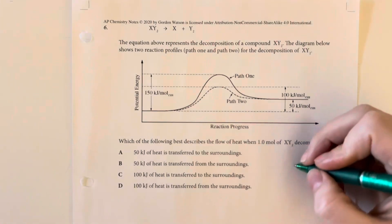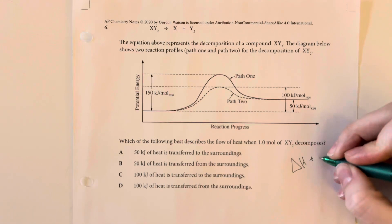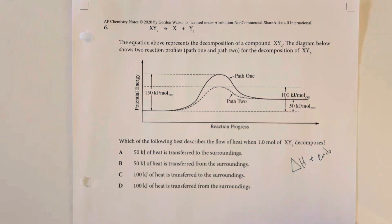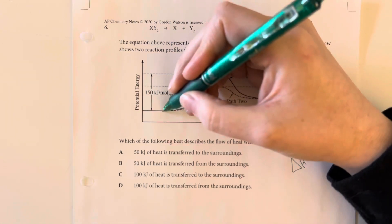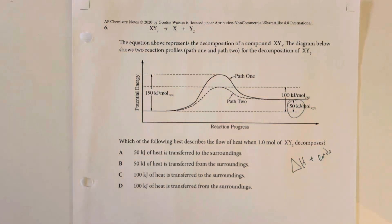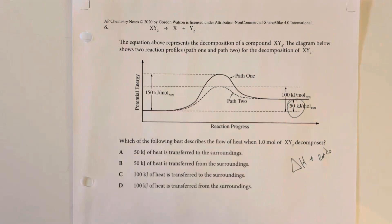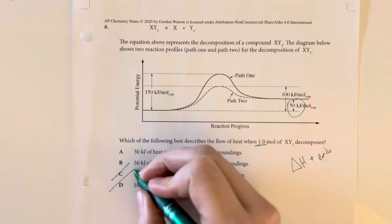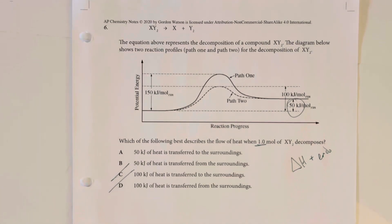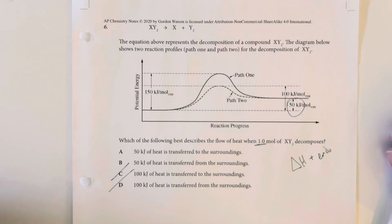We have a delta H that is positive, meaning this is endothermic — we take in energy from the surrounding area. We are measuring from the final state and the initial state, and the 50 kilojoules per mole is the number we are interested in. Since only 1 mole is decomposing, we do not change that number at all. We can go ahead and eliminate answer choices C and D because they do not reflect the amount of energy that would be absorbed.